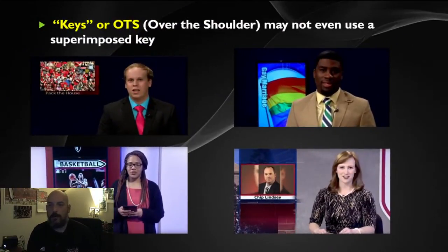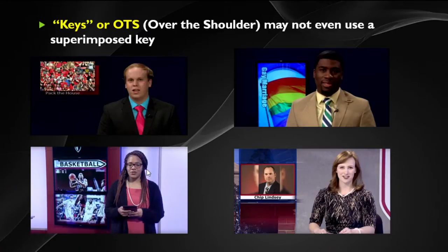Another type of shot is called a key shot or OTS for over the shoulder, and they don't always involve an alpha channel or keying technology. Looking at this, in the upper left and bottom right, my two talents have a graphic being superimposed over their shoulder using the production switcher. But in the opposite corners — upper right and bottom left — the anchors have a monitor behind them displaying that graphical information. All four talents have space allocated on one side of the screen for the production switcher to either embed a photo in front of them, or they can use set dressing such as a monitor behind them to display that graphic.